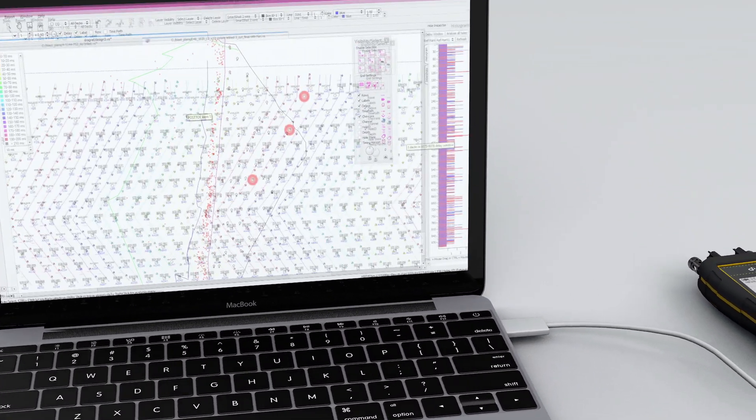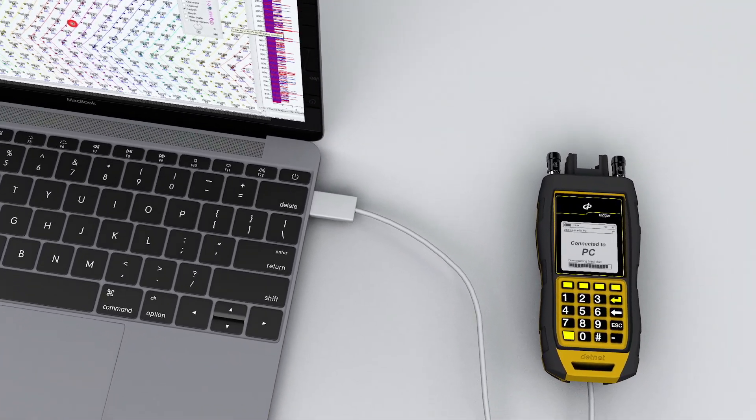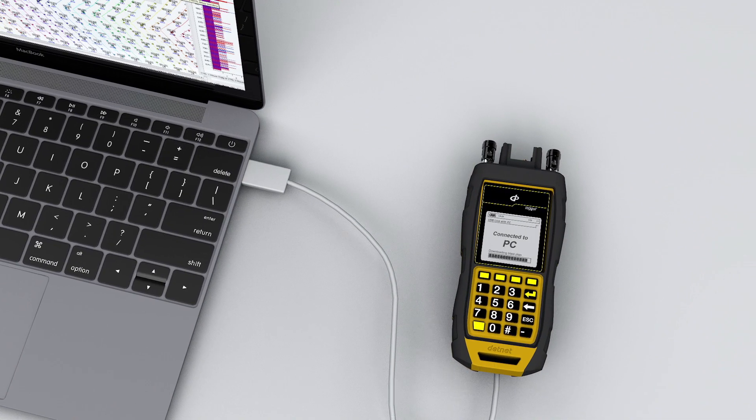First, the timing is put into the detonator. The detonator times can either come from a computerized blast design, or the user can simply assign the time at the hole.